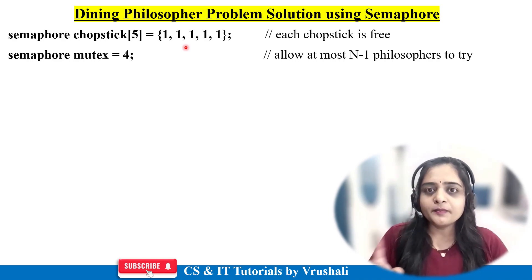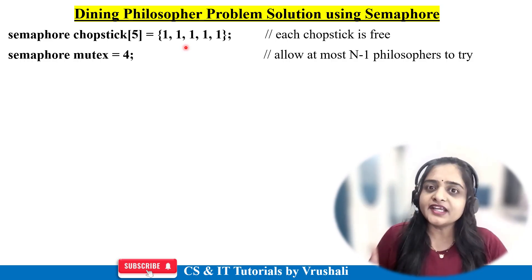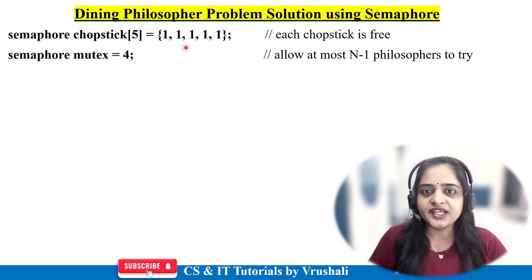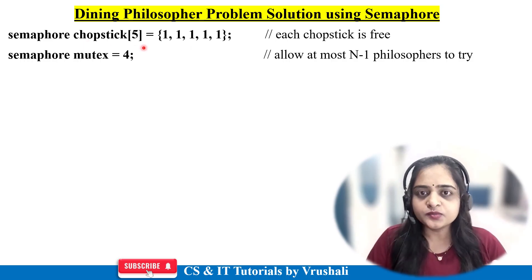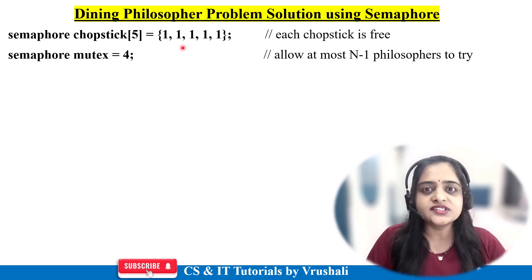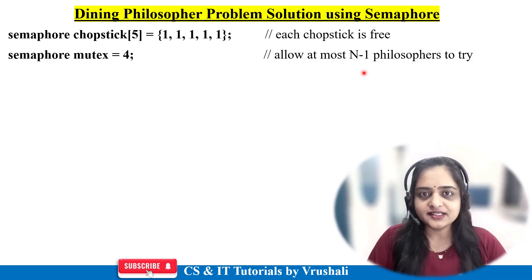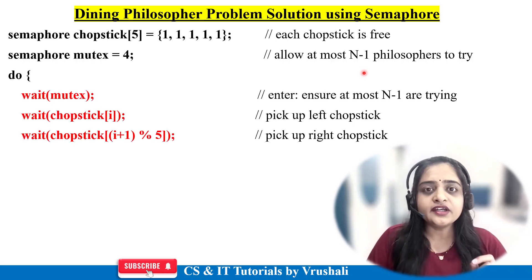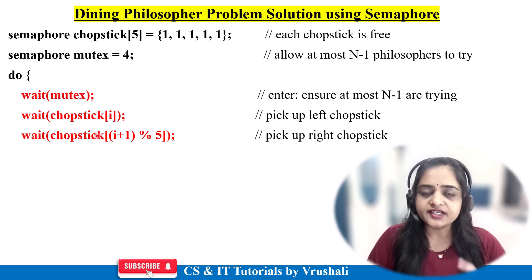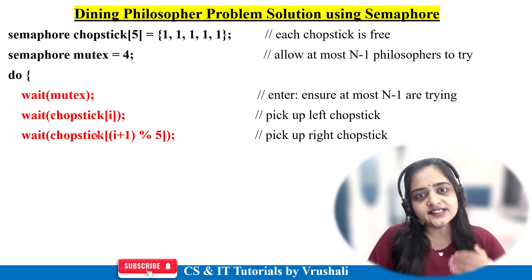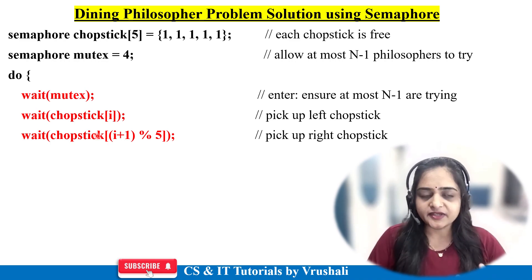For example, printer equal to 1 means the printer is busy, and printer equal to 0 means the printer is free — in this way. There are a total of five spoons and initially all spoons are free. Semaphore mutex equal to 4 means n minus 1 philosophers are allowed. In operating system there are two functions: wait and signal. Wait means hold the resources, and signal means release those resources.